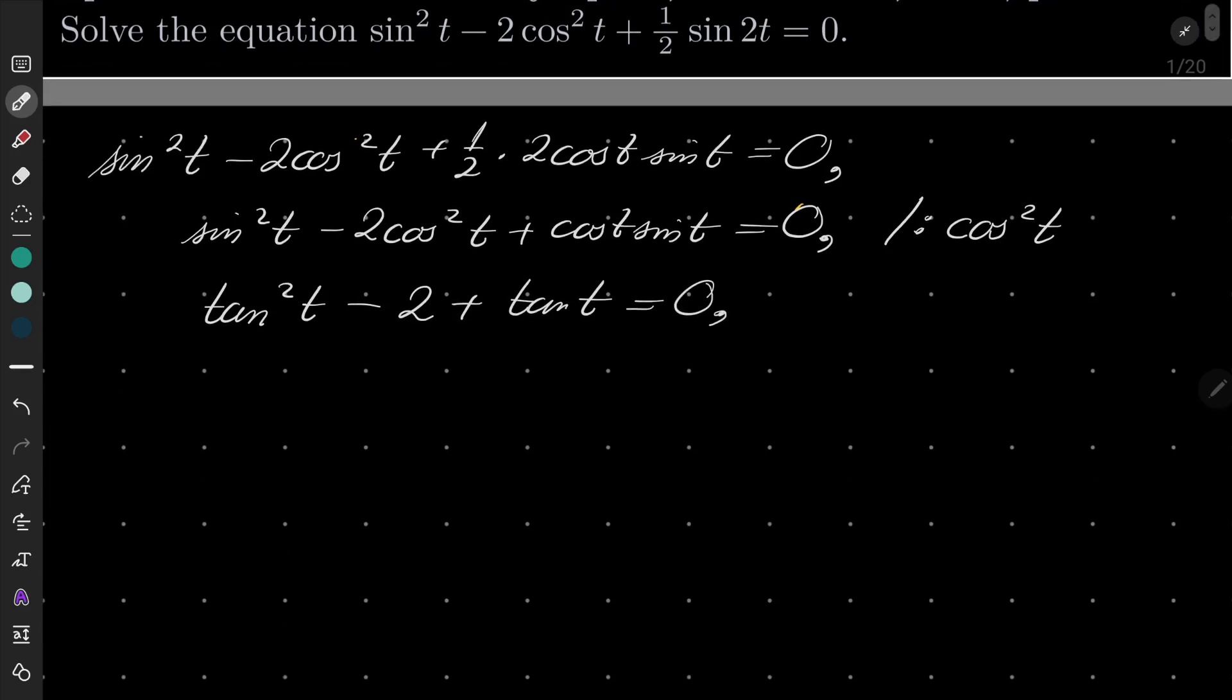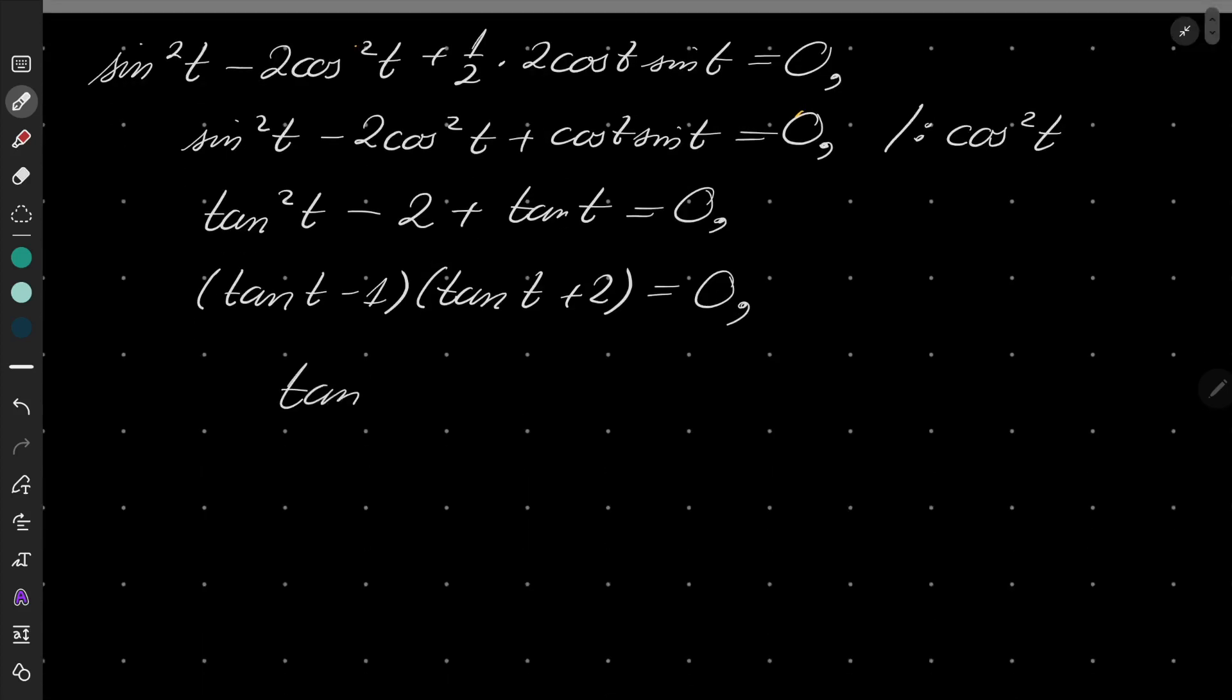So we have a quadratic equation. We can factorize the left-hand side, and now we see that either tan(t) = 1 or tan(t) = -2.